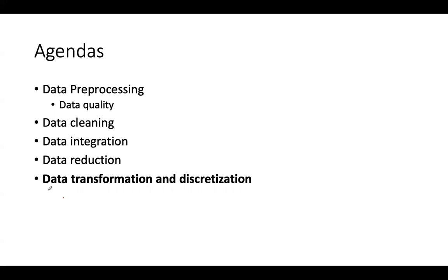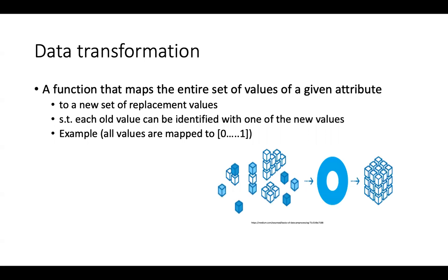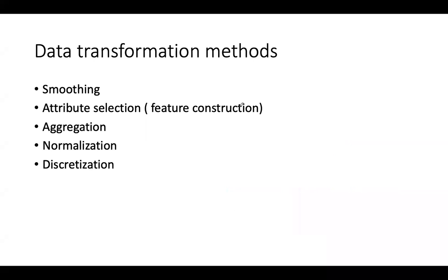Now let's look at the last component in data pre-processing: data transformation and discretization. Data transformation is just the process of changing the format, structure, or values of the data. Given our dataset, we can transform an attribute into a new value from existing attributes by applying some function — essentially mapping an existing variable to something different.